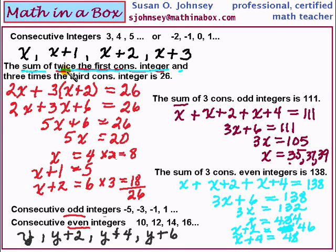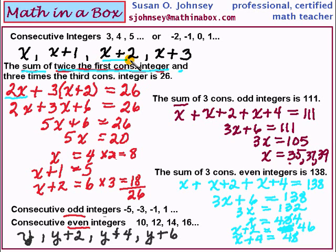Twice the first consecutive integer — twice means multiply by 2, so I wrote 2x. Then three times the third consecutive integer: the third one in our list was x plus 2, so I multiplied it by 3. I added those together to get 26. Practice reading word problems and you will get better at it — they're really not that hard. This is Susan Chauncey with mathinabox.com. If you need help you can always email me — I answer email daily, 350 days out of the year.